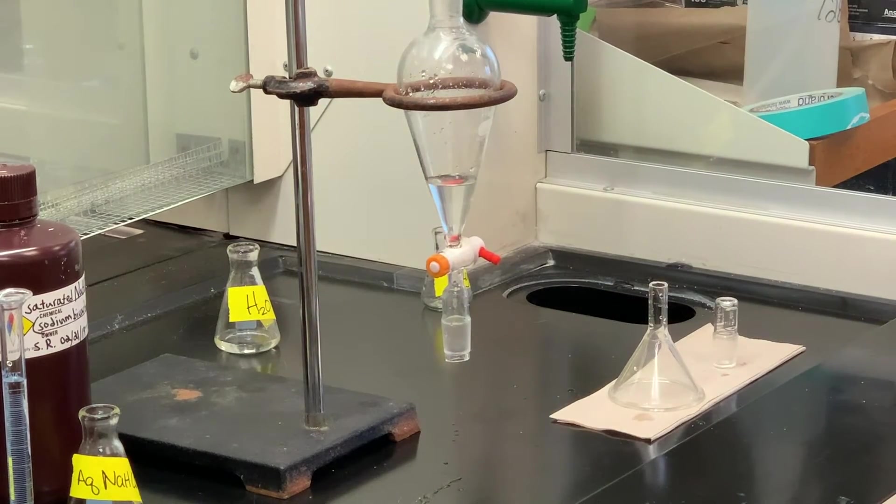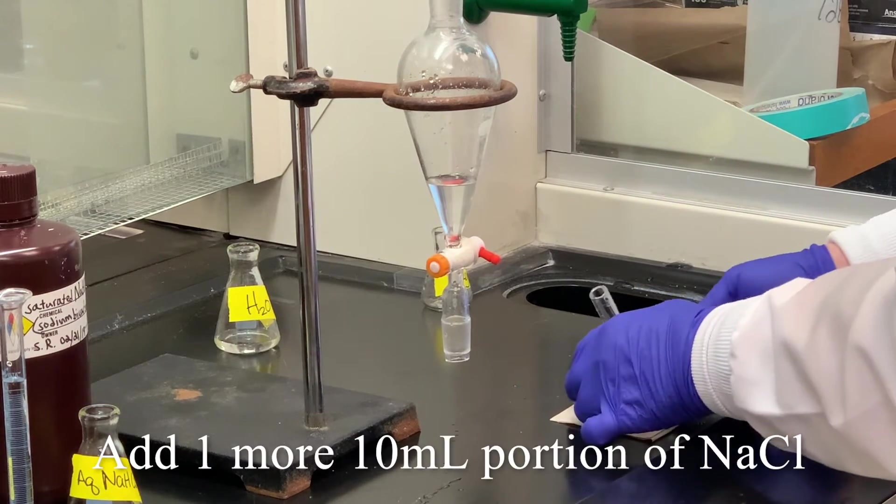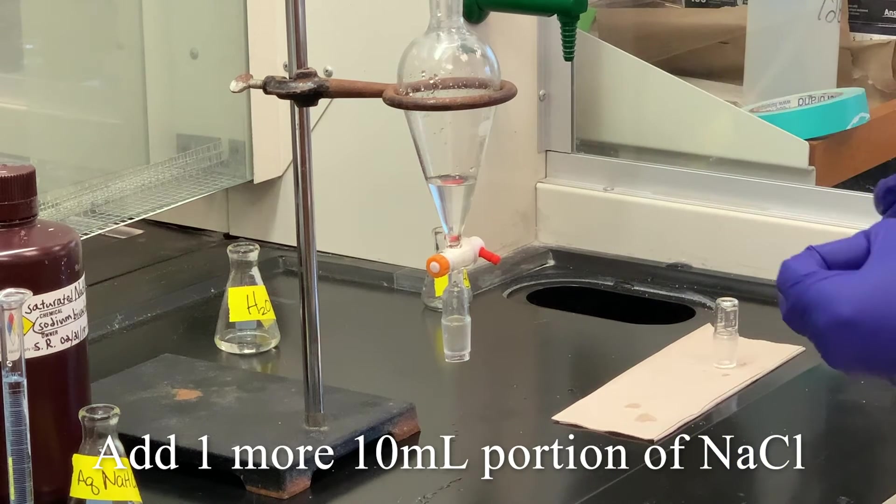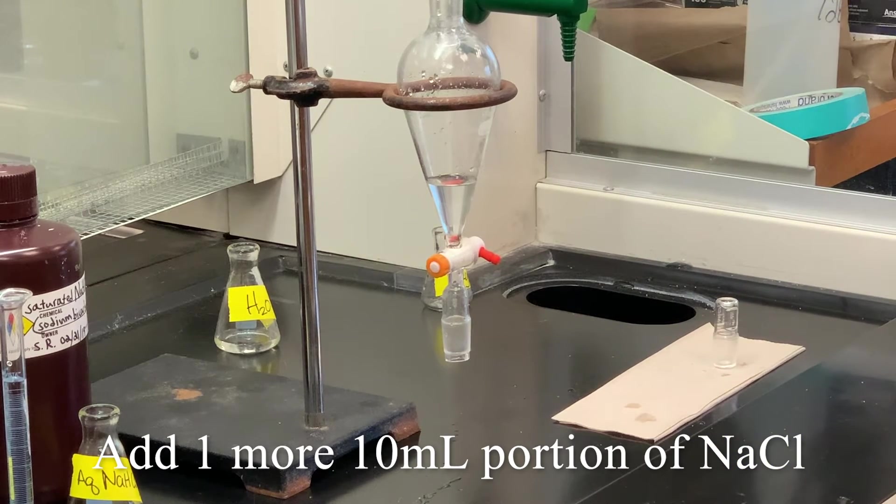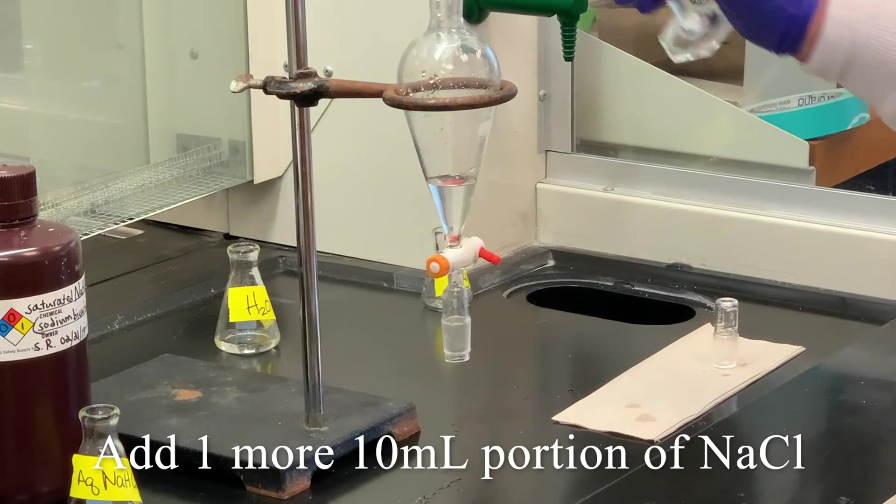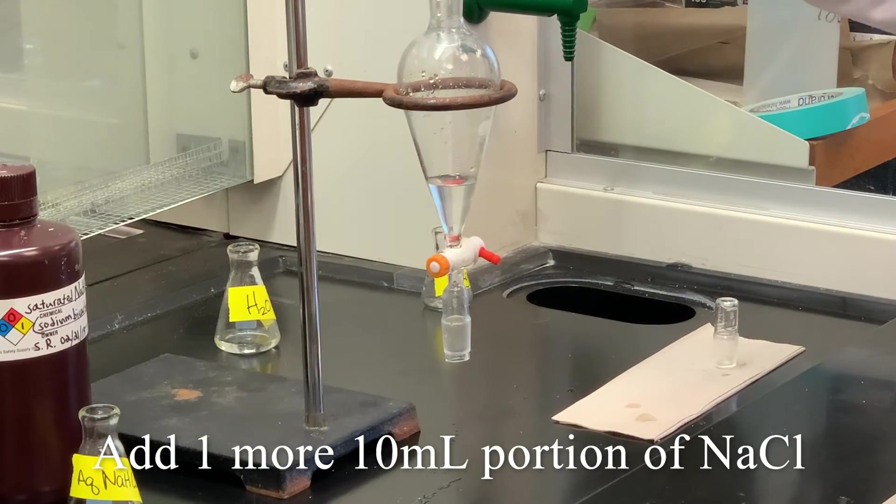So here's the aqueous layer. And then we're going to add one more 10 ml portion of sodium chloride. Again, sodium chloride is very useful. It kind of draws out anything that could be trapped within that organic layer. So we're going to add the 10 mls of the sodium chloride solution again.